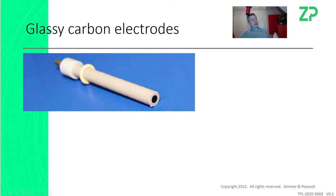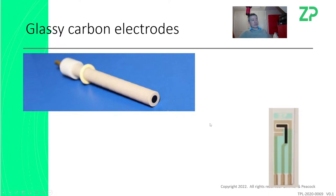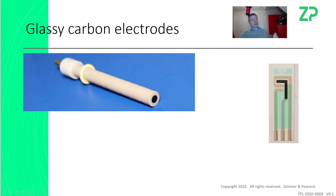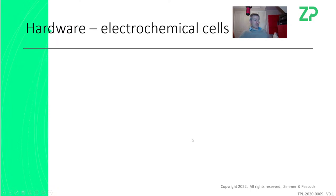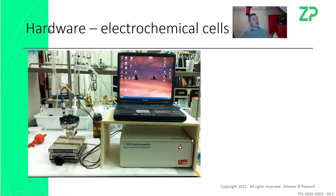When developing a glucose strip, a glassy carbon electrode is not a good reflection of the final product — it's useful for R&D but it's the wrong structure. Rather than bringing the probe to the sample, you bring the sample to the probe. That's how a glucose strip works — you don't stick glucose strips in blood, you bring blood to glucose strips.